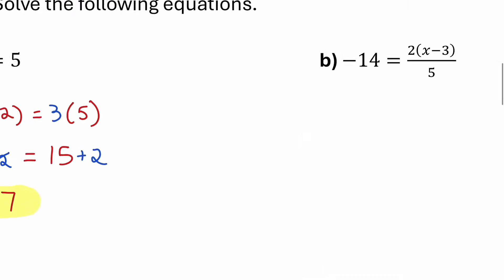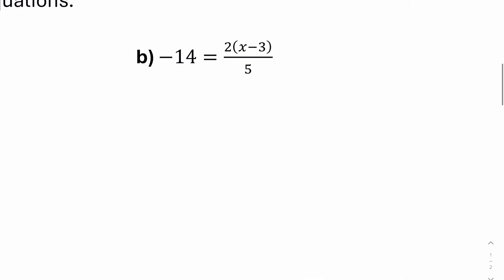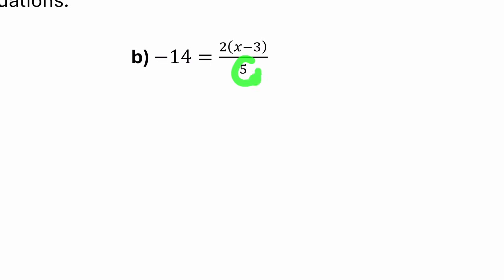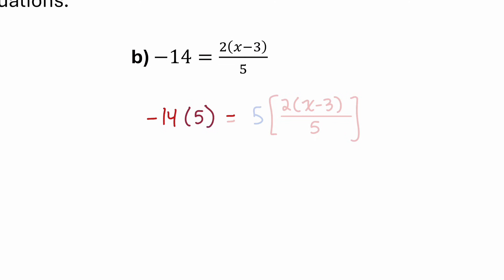Moving on to part B. In this equation, I only have a single fraction — the only denominator is 5. So we can start by getting rid of that denominator of 5 by multiplying both sides of the equation by 5.